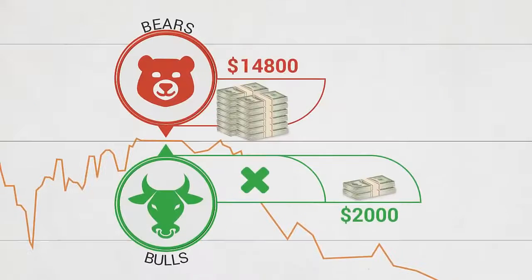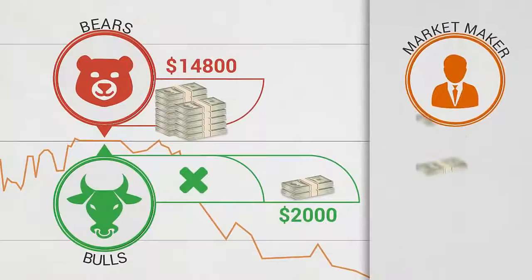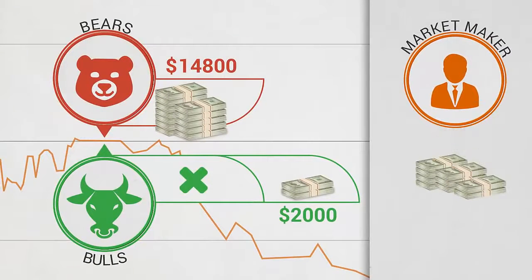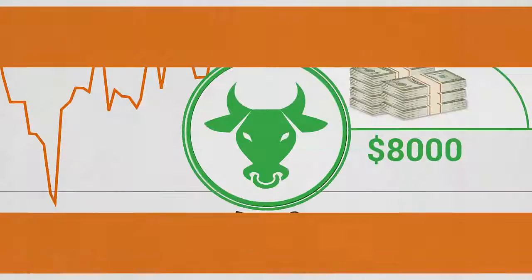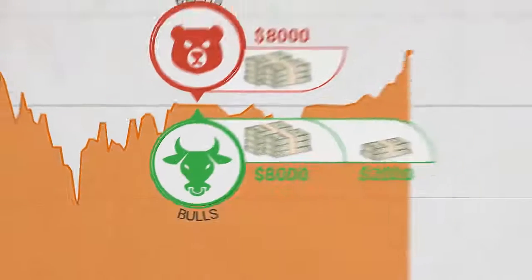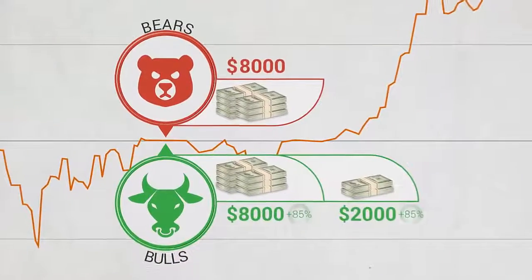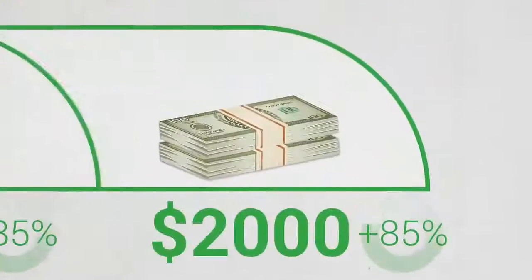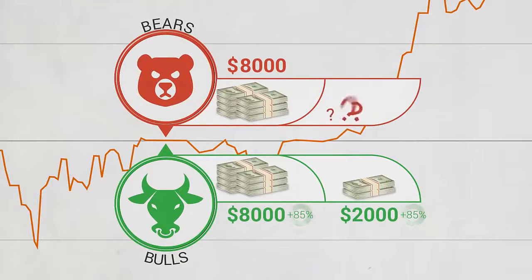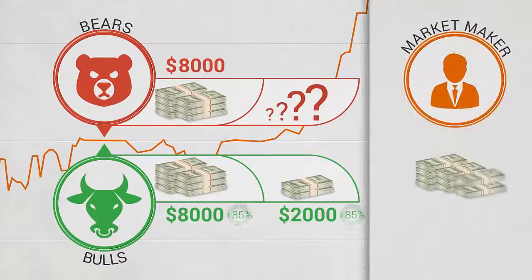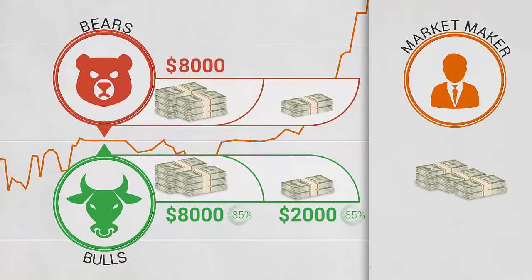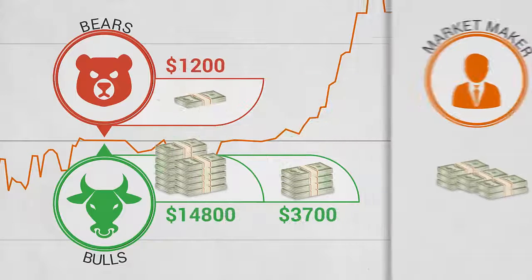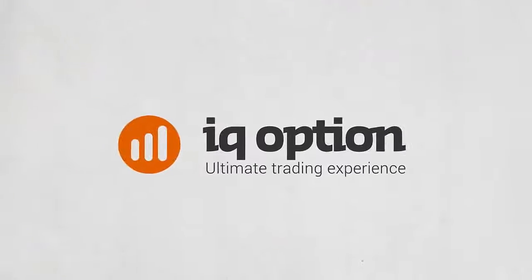7.5% of the return will go to IQ Option as a commission. The discrepancy or tilt of $2,000 will go to the market maker, who takes all the risks. The market maker's risk appears in the reverse market situation: if the bulls are successful and the asset's price goes up, the bulls get the returns, but because of the discrepancy of $2,000 the bears are out of funds. That's when the market maker compensates for the discrepancy from his own funds to ensure that the bulls receive all of their returns. We wish you successful trading with IQ Option.